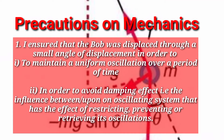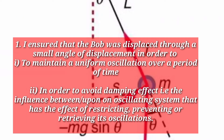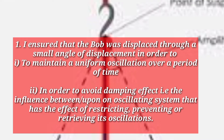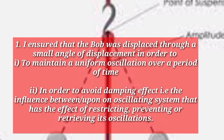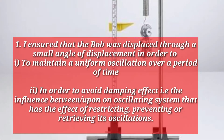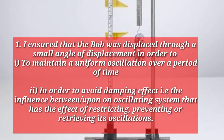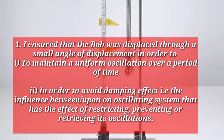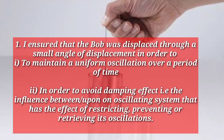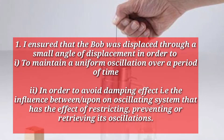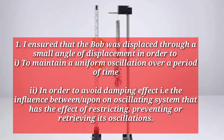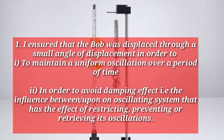1. I ensured that the bob was displaced through a small angle of displacement in order to maintain a uniform oscillation over a period of time, and in order to avoid the damping effect — that is, the influence upon an oscillating system that has the effect of restricting, preventing, or reducing its oscillations.